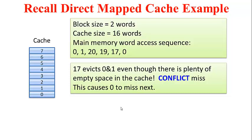Note that 17 evicts the earlier present word addresses 0 and 1 from block number 0, even though there is plenty of empty space in the cache at the point when 17 is accessed. So the cache miss which happens when 0 is accessed next is known as a conflict miss, because word addresses 17 and 0 happen to map to the same cache block — only one of them can be present in the cache at any given point of time.